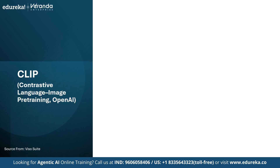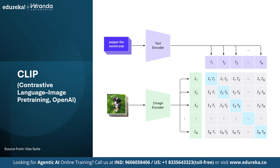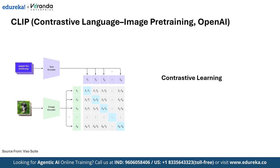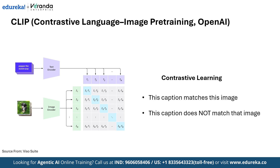Here's how CLIP works: it has two encoders — a text encoder and an image encoder. Both encoders map inputs into the same embedding space. During training, it learns that 'this caption matches this image' and 'this caption does not match that image.' It uses contrastive learning, pushing correct pairs closer and incorrect pairs further apart. An image is processed by a vision encoder and text by a text encoder, both mapped to a shared embedding space, and finally it generates the output.